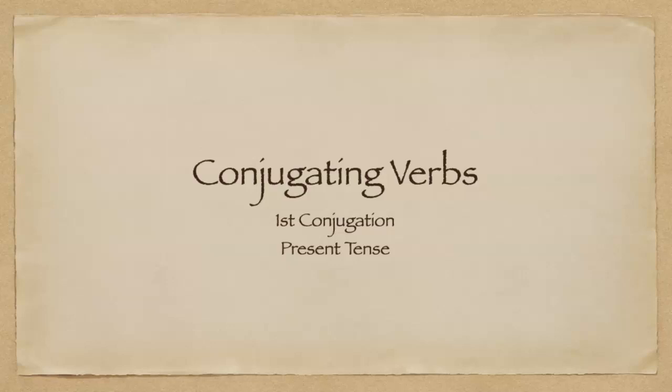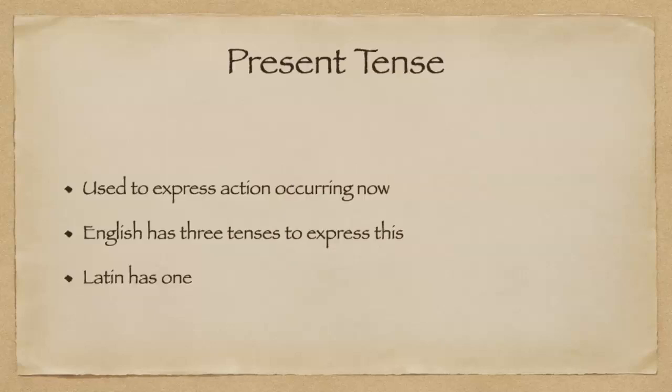When we're looking at the present tense, we need to understand a couple of things. First of all, the present tense is used to express action that's occurring right now. English has three tenses to express this, which is going to become important later when we translate our conjugation. Latin, however, only has one.